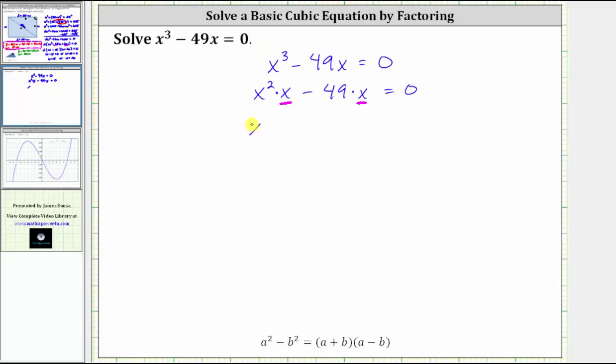So if we factor out x, we can see we're left with x squared minus 49, and this product is equal to zero.